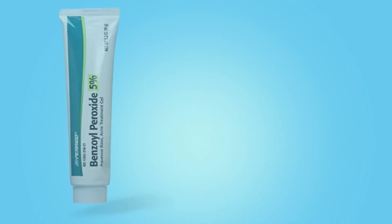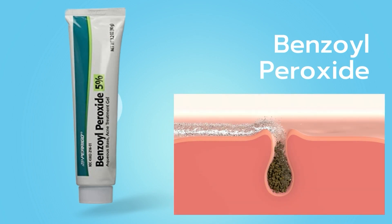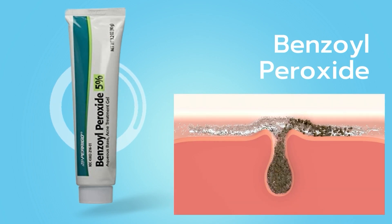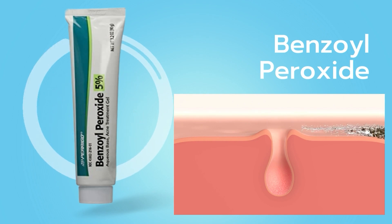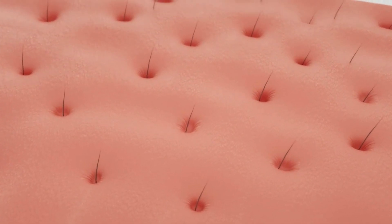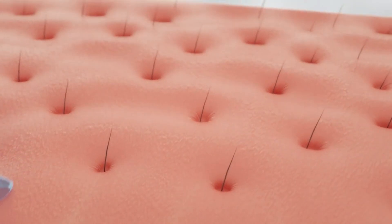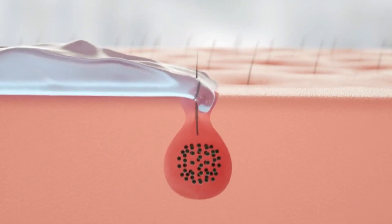What does benzoyl peroxide do to acne? It opens clogged pores, reduces sebum or oil production, and acts as an antibacterial agent by reducing bacterial overgrowth. That's why it's such an effective drug — it works in many ways against acne.